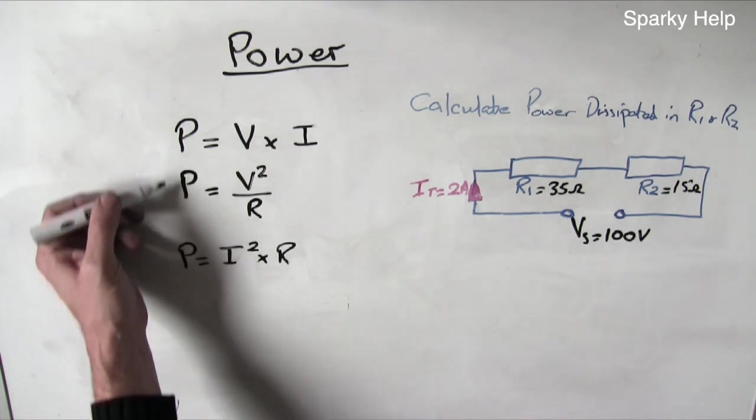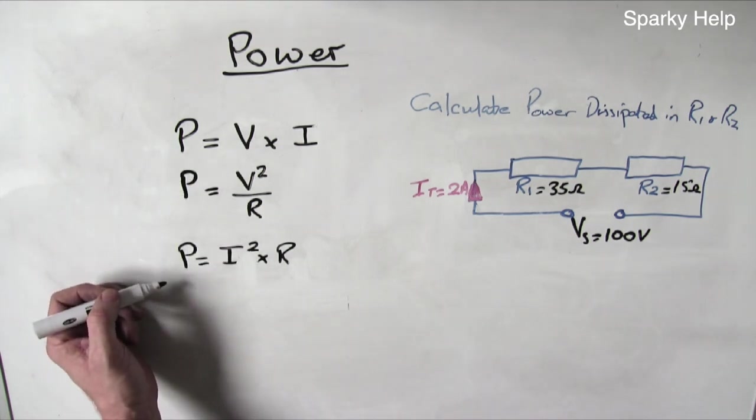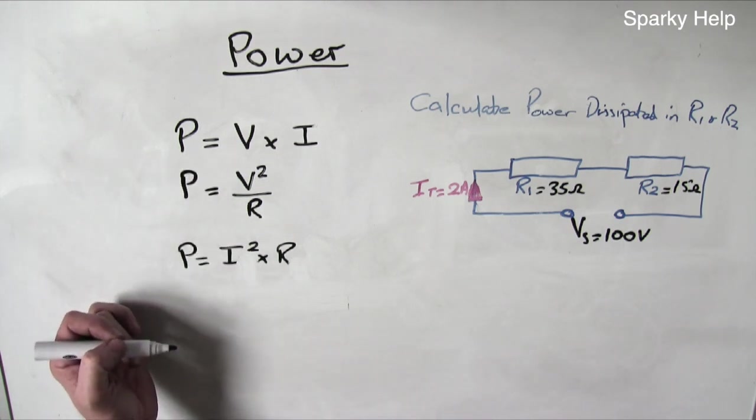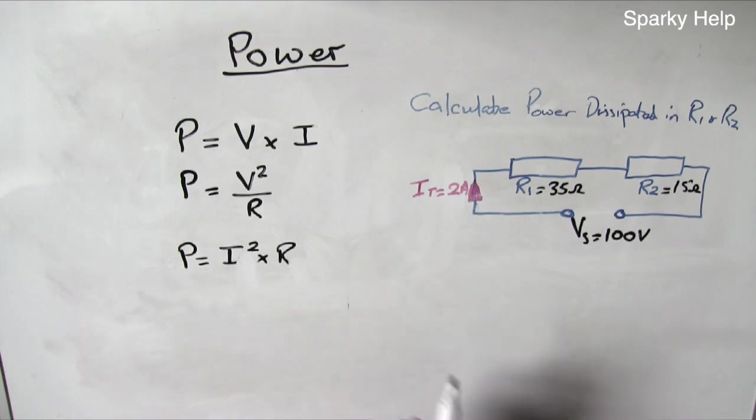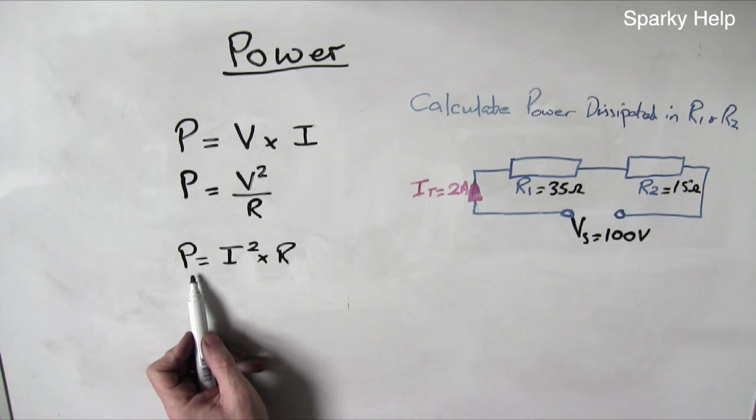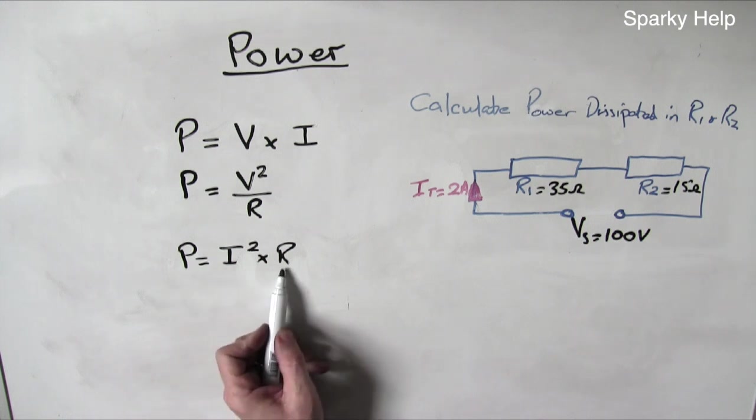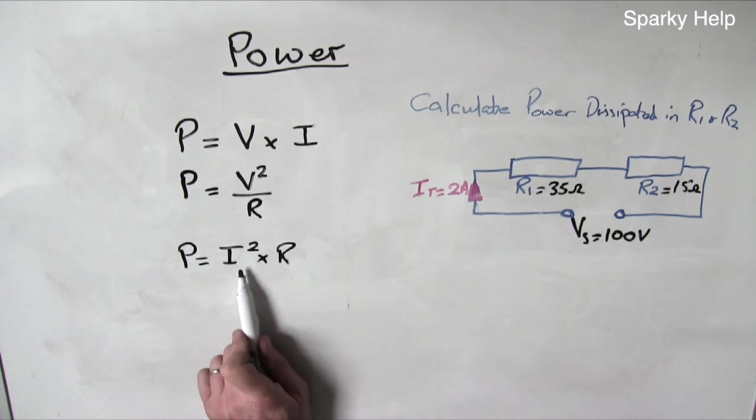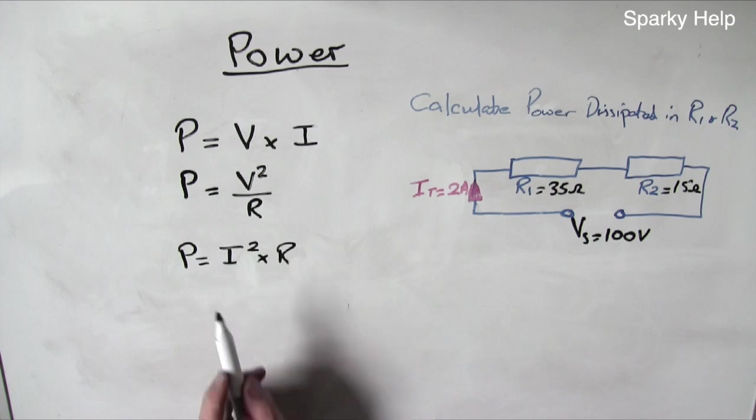So we have three formulas we can use. You can use all of them to be quite honest, but some of them may require you to calculate other things along the way. So in order to calculate anything that says power dissipated, the go-to formula I tend to use is always I²R. So whenever I read the word power dissipated, more often than not this is the value and the formula that I tend to go with.